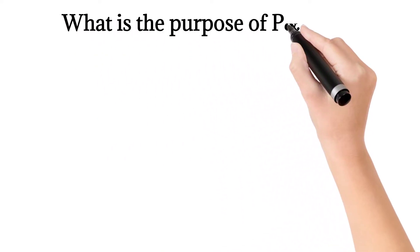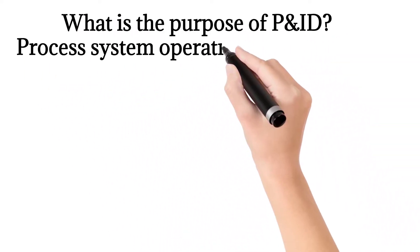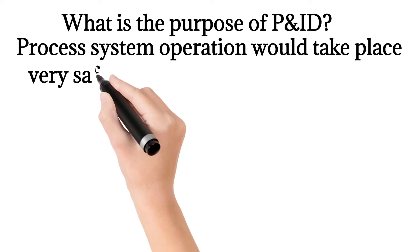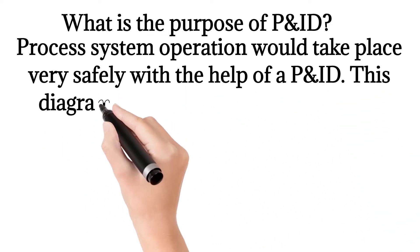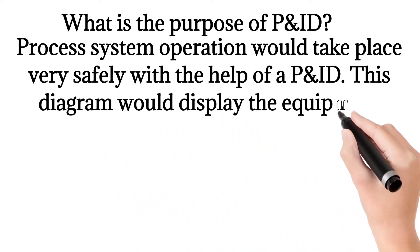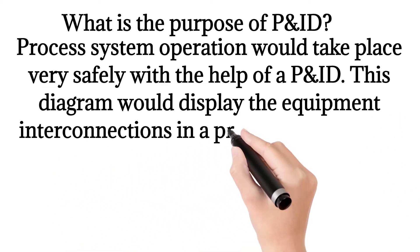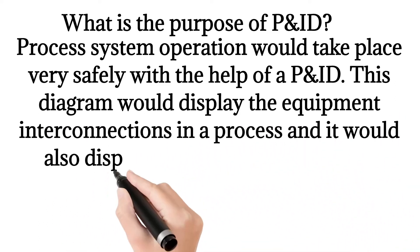What is the purpose of P&ID? Process system operation would take place very safely with the help of a P&ID. This diagram would display the equipment interconnections in a process and would also display the instrumentation that controls the process.